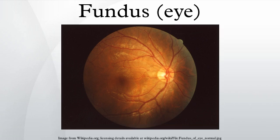The fundus of the eye is the interior surface of the eye opposite the lens and includes the retina, optic disc, macula, fovea, and posterior pole. The fundus can be examined by ophthalmoscopy and/or fundus photography. The term fundus may also be inclusive of Bruch's membrane and the choroid.